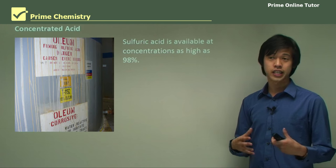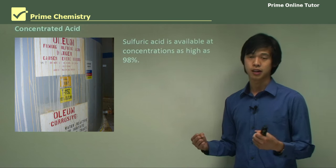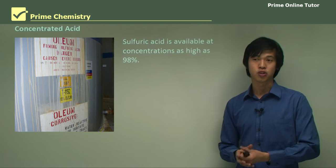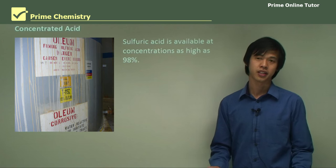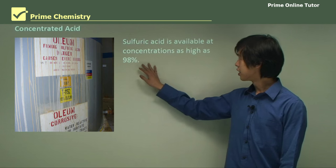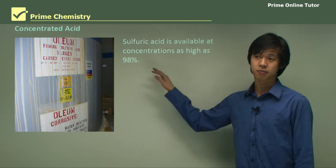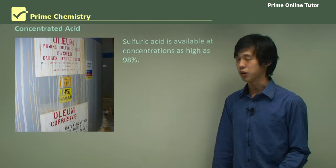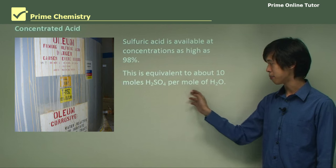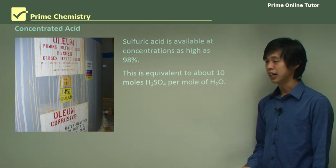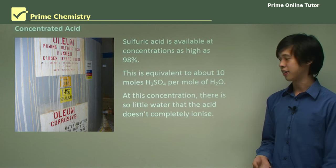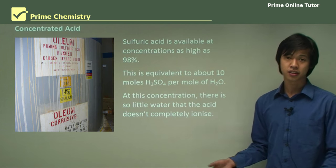Sulfuric acid is generally always found in concentrated form until we need to dissolve it, simply for storage reasons. If you have a very concentrated amount, you don't need as much volume to store it — you just dilute it later, similar to how cordial works. Sulfuric acid is available at concentrations as high as about 98% — so 98% sulfuric acid and 2% water — which is about equivalent to 10 moles of sulfuric acid per mole of water. At this concentration there's so little water available that the acid doesn't even ionize completely.